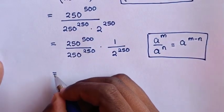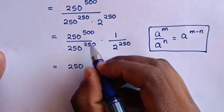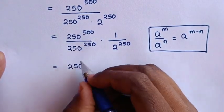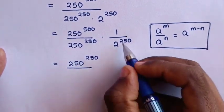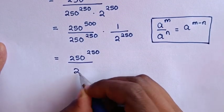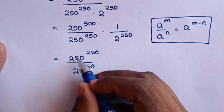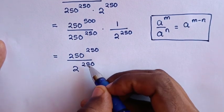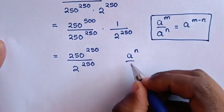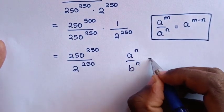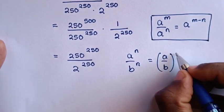Here it will be equal to common base of 250 power of 500 minus 250, which is 250, then over 2 power of 250. From here, division of exponents with different base but same power, so we will apply the rule a power of n over b power of n is equal to a over b bracket power of n.